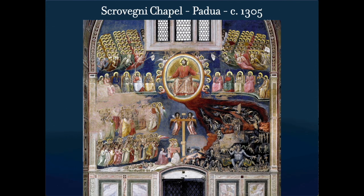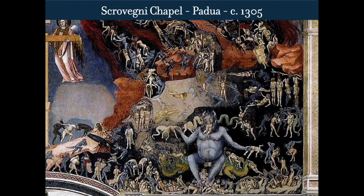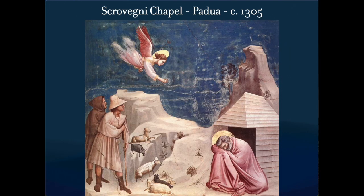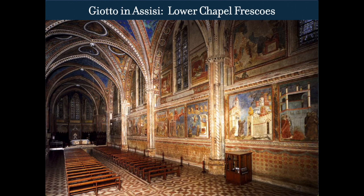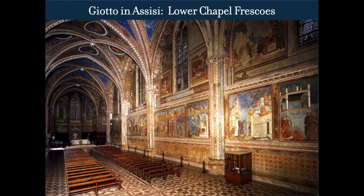On one end of the Scrovegni Chapel he does what is often done in chapels — the Last Judgment — with a whirling realm of demons on one side and the Church Triumphant on the other. Another panel uses a similar compositional device: the angel is bright against a dark background, and our eye goes down to Saint Joseph sleeping. Just after Cimabue did his work in the Basilica of Saint Francis, Giotto was invited to come up to the upper chapel to do a series of frescoes depicting Saint Francis.